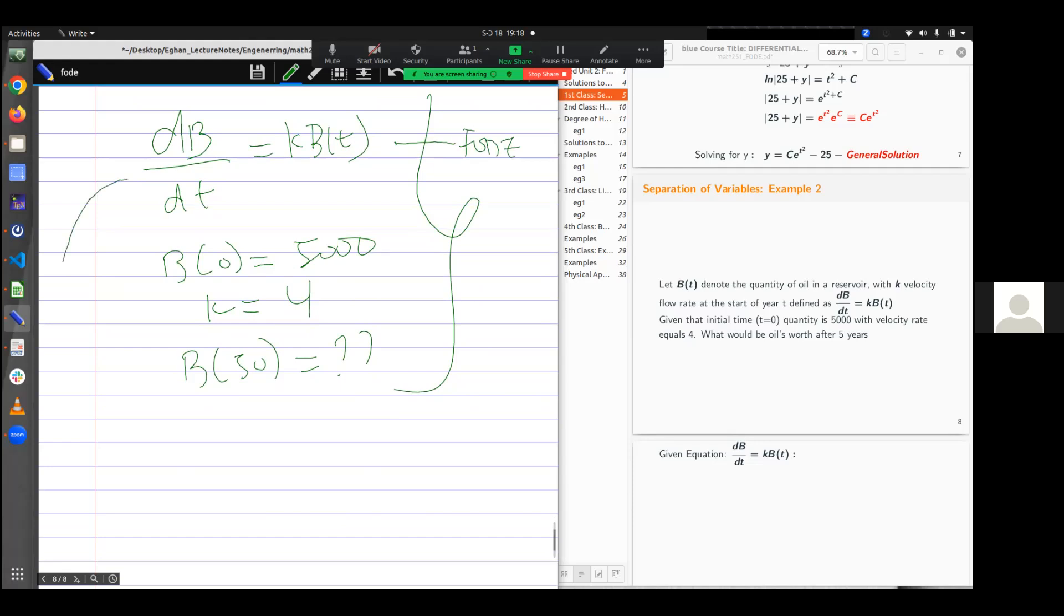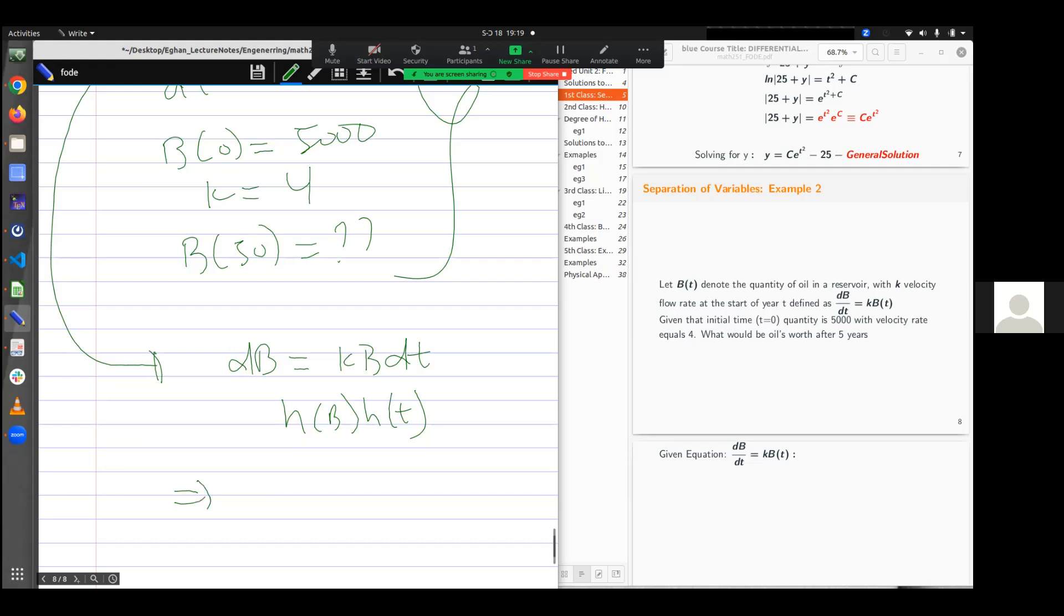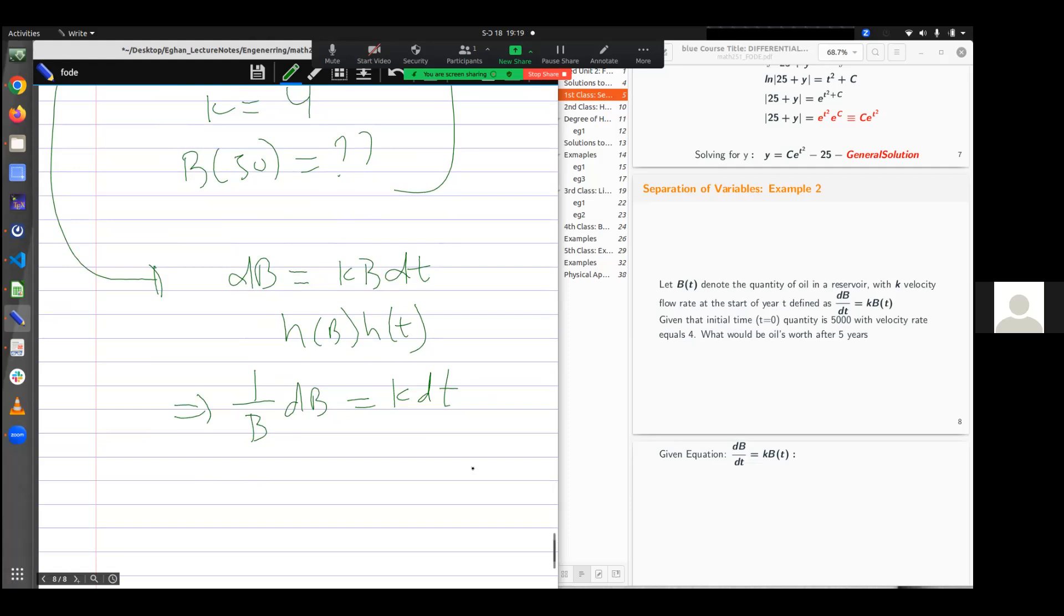It's already in the standard form. So if I want to write this in a differential form, it becomes db equals to kb dt. But I want to write this in terms of b only and then t only. Can I do that? Yes. Since k is a constant, no matter where it stays, I'm still correct. So this is good. I have terms of b only and I have terms with respect to t here.